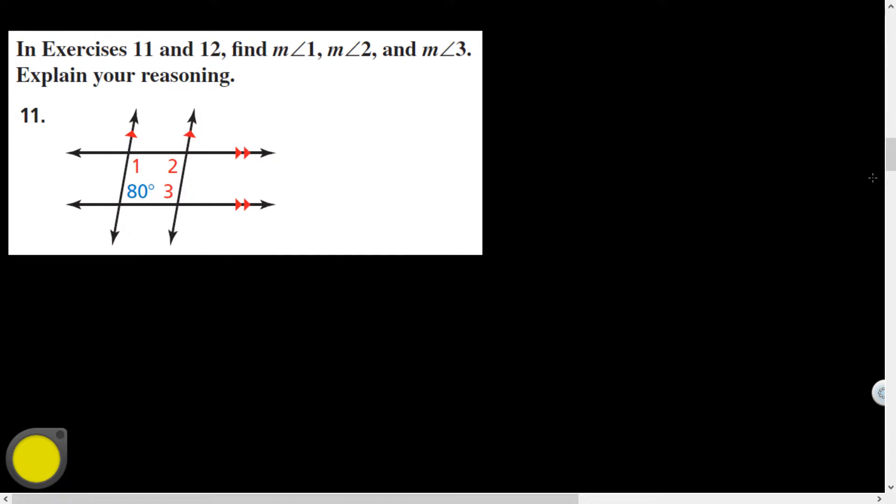Alright, similar problem. In exercise 11, find the measure of Angle 1, 2, and 3, explain your reasoning. Okay, let's see, so let's find measure of Angle 1. I'm going to say Angle 1 is 100 degrees. Why is it?